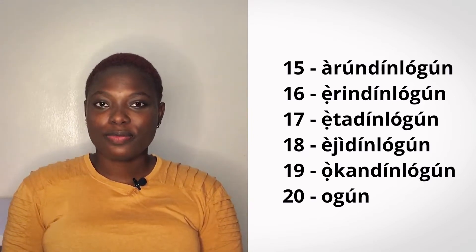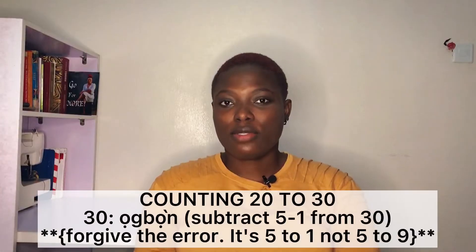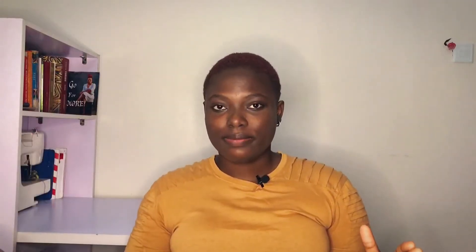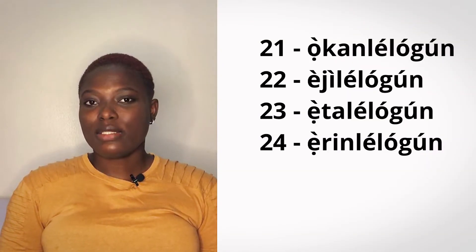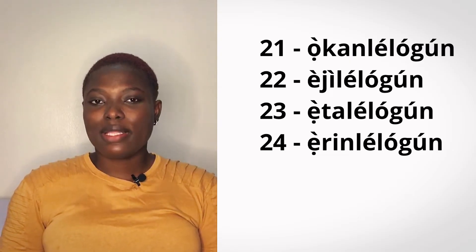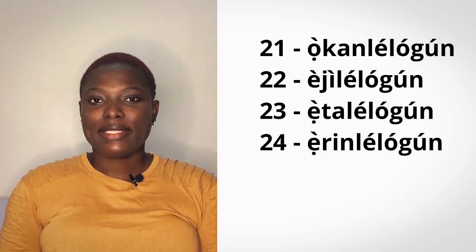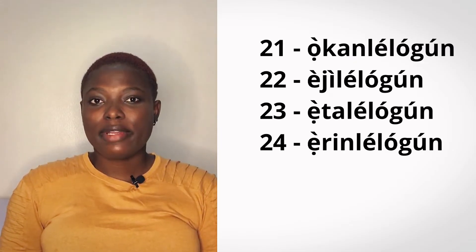20 is ogun. From 20 to 30, we are adding 1 to 4 to ogun: okon li ogun (1 added to 20), eji li ogun (2 added to 20), eta li ogun (3 added to 20), erin li ogun (4 added to 20).